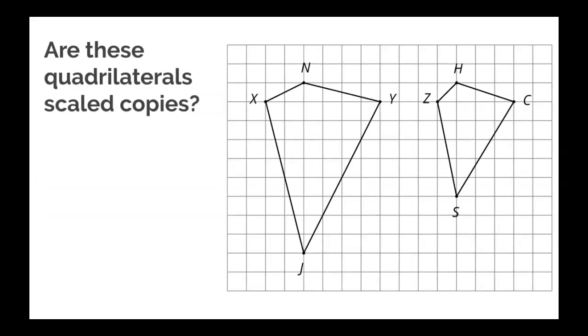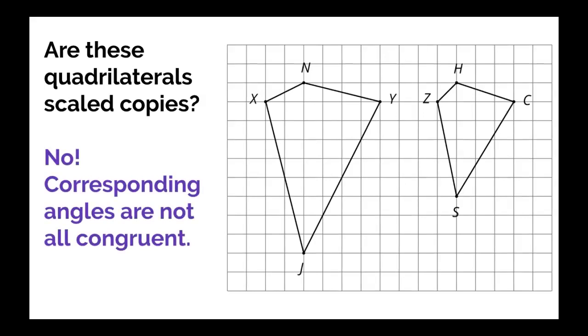Check out these quadrilaterals. Are these quadrilaterals scaled copies? The answer is no. You can see that the corresponding angles are not all congruent. For instance, if you use tracing paper and made a little angle, you'll see that angle NXJ does not match angle HZS.